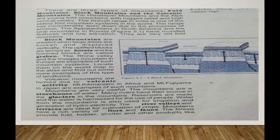Their peaks are conical in shape and the surface is rugged. The Aravalli range in India is one of the oldest fold mountain systems in the world. The range has been considerably worn down due to the process of erosion. The Alps in North America and Ural Mountains in Russia have rounded features and low elevation — they are very old fold mountains.